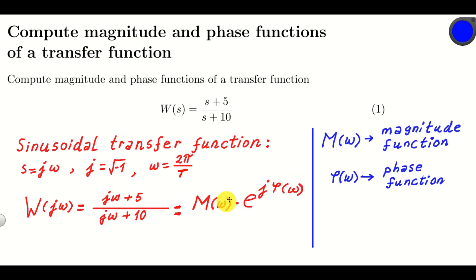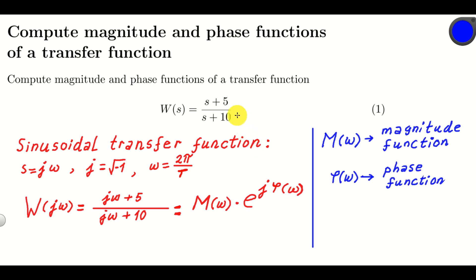In this representation, M of omega is the magnitude function and phi of omega is the phase function. The problem of computing the magnitude and phase functions boils down to the problem of computing the polar form of the sinusoidal transfer function.